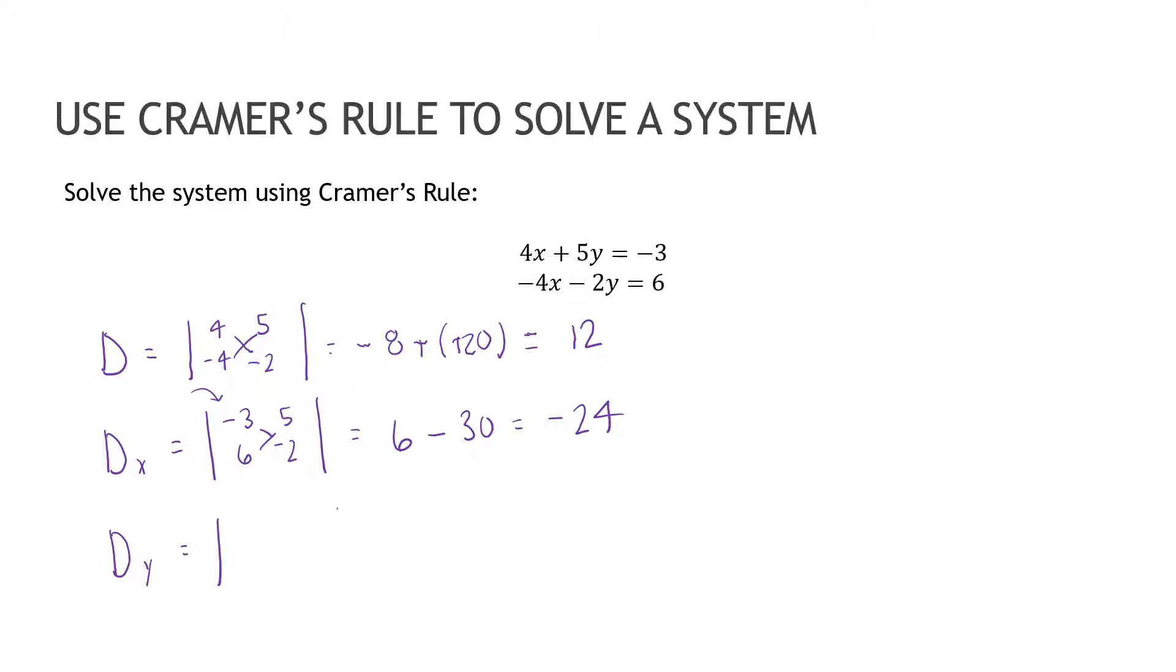Lastly, the X column for this one stays like the original X column, but the Y column gets replaced by negative three, six. Then I cross multiply 24 minus positive 12, which gives me 12.